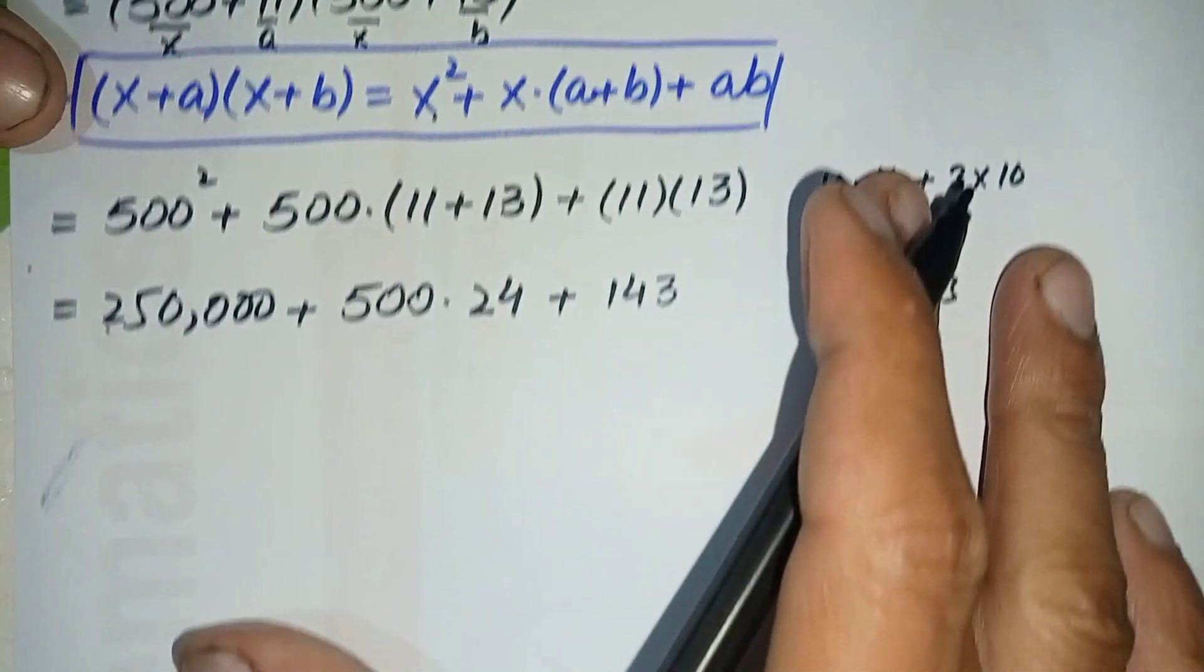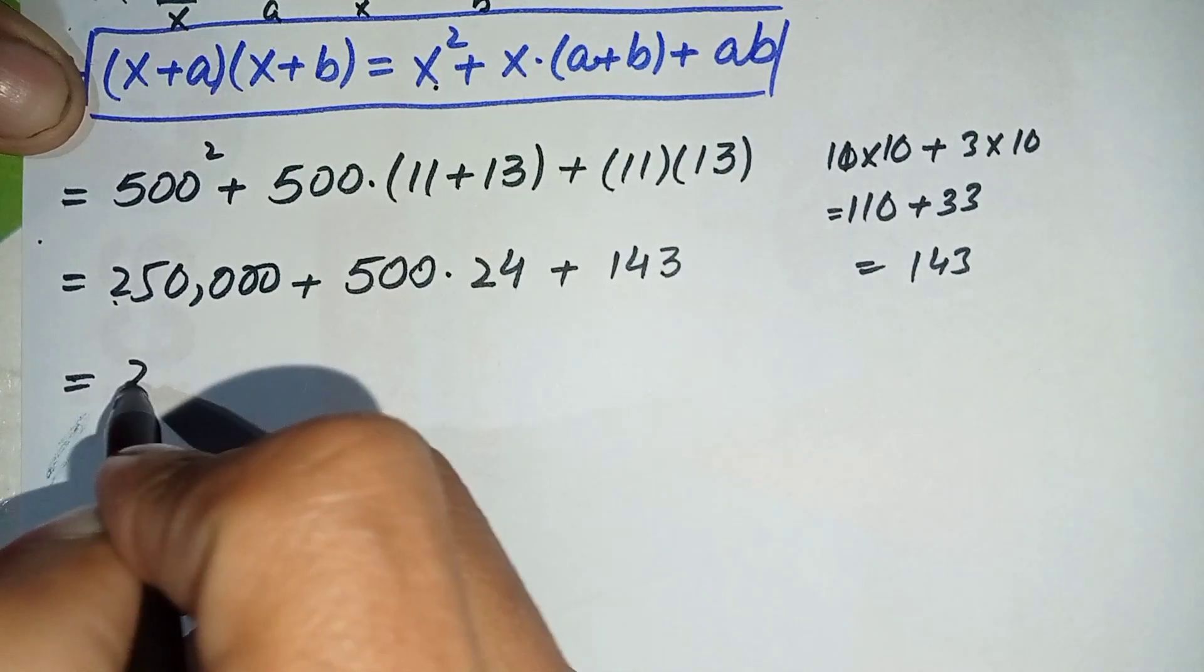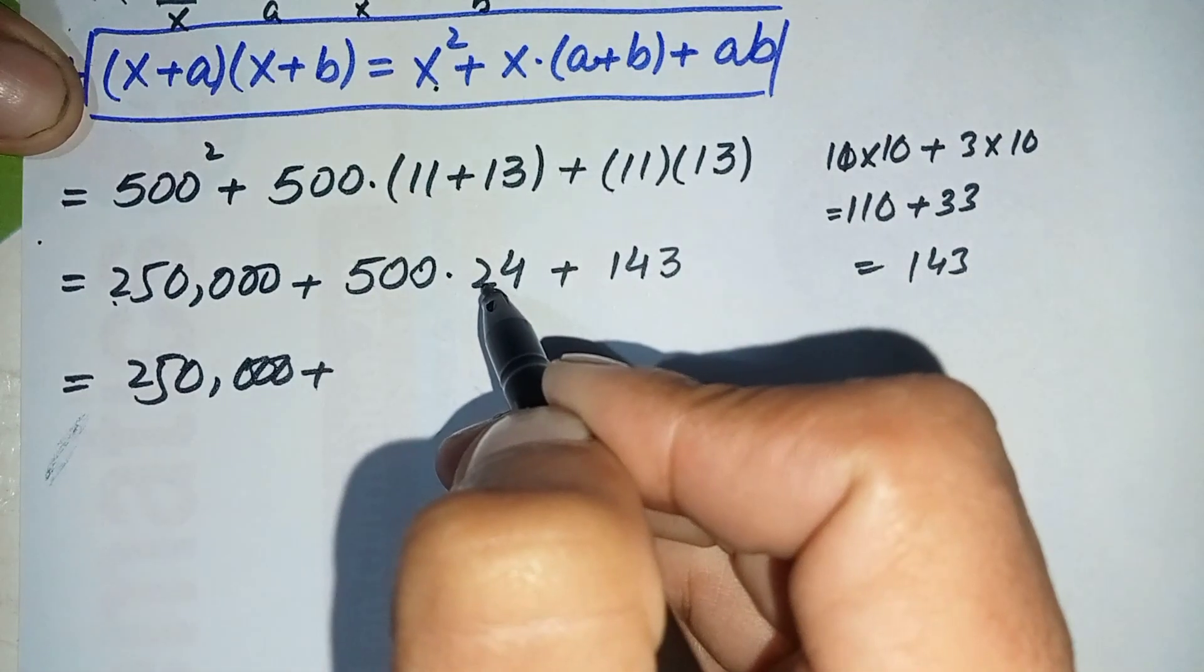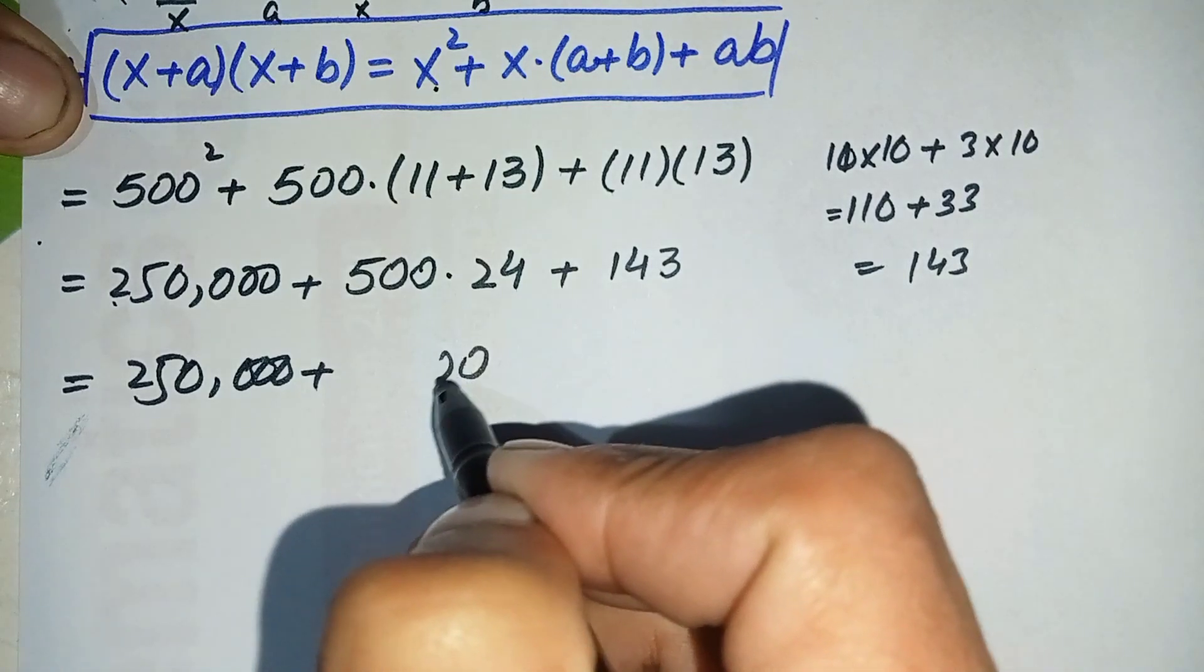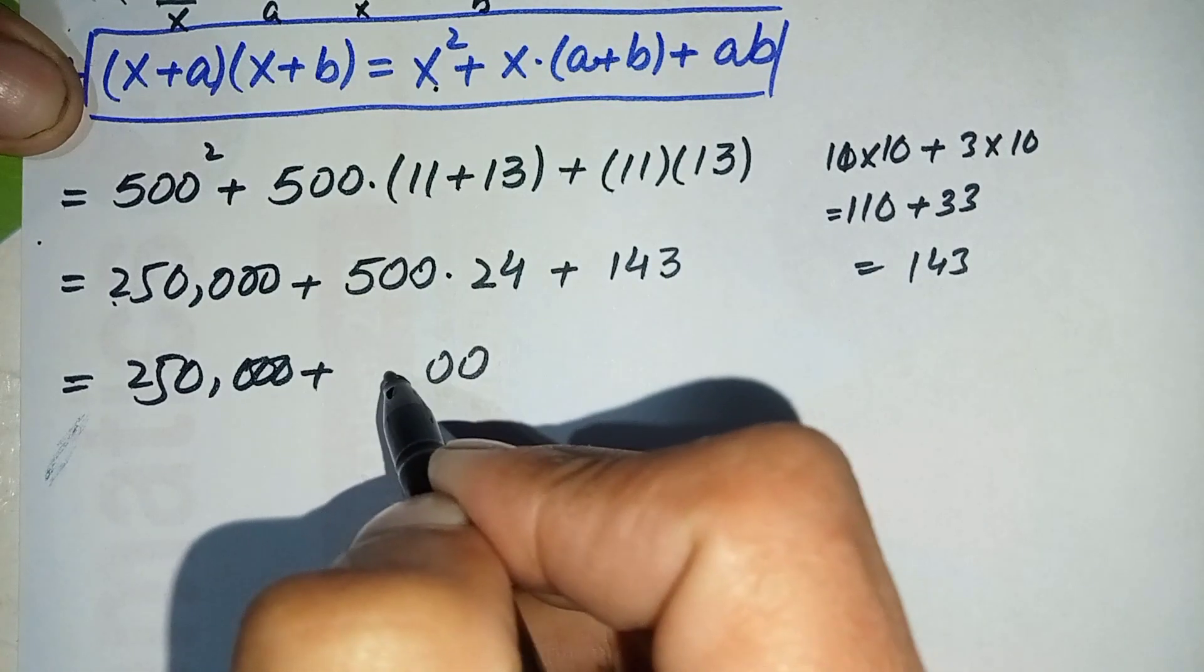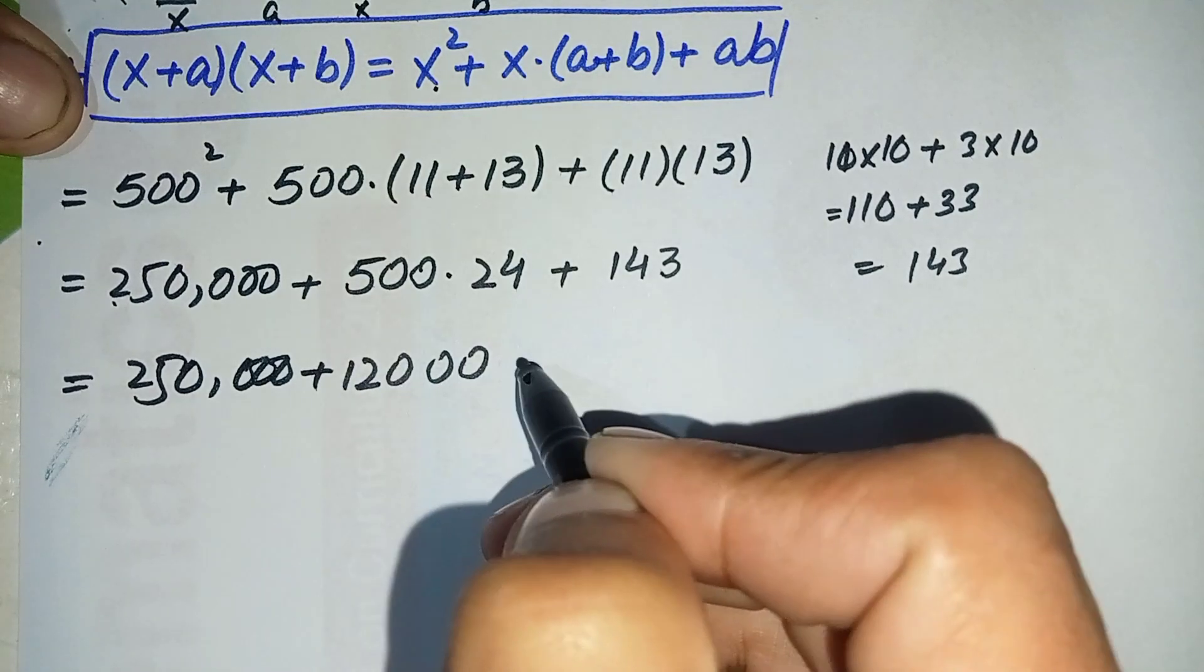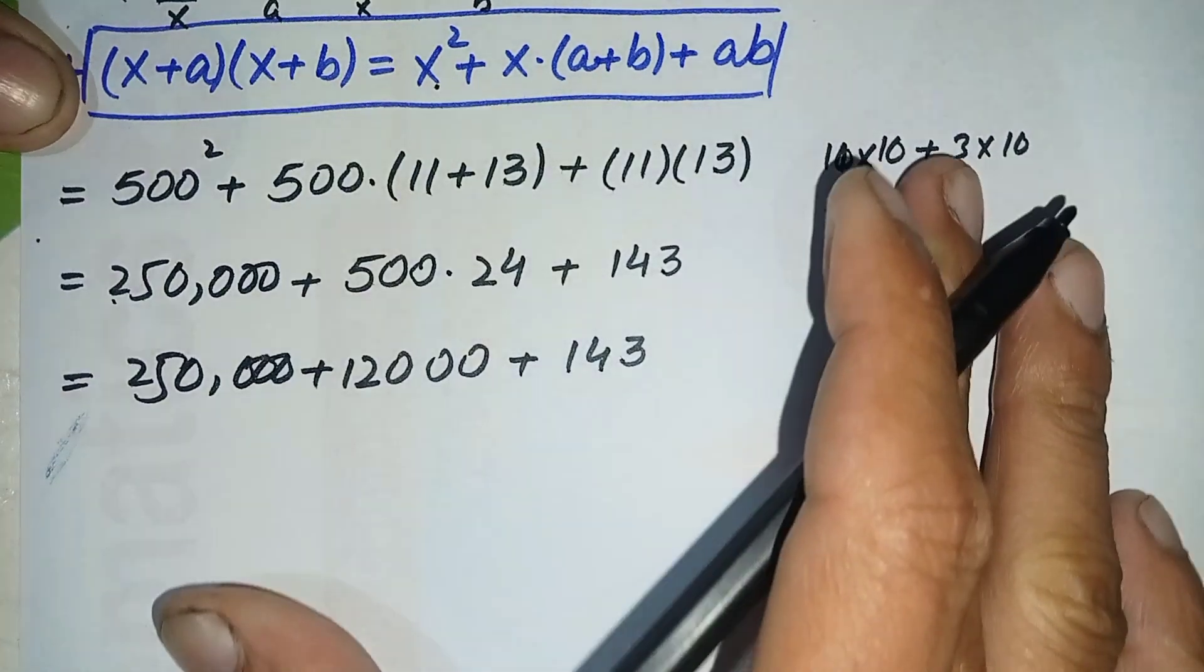Let's further simplify this equation. So this term will be the same, plus 24 times 500 is 12,000, plus 143 will be the same.